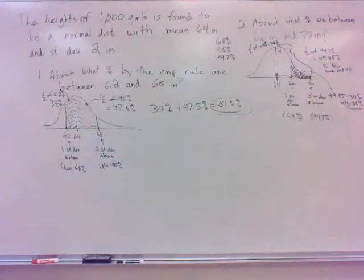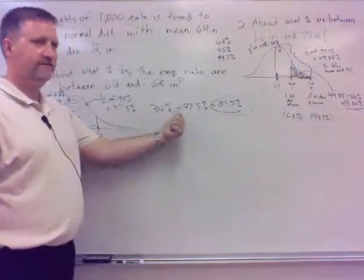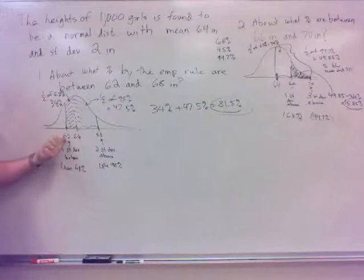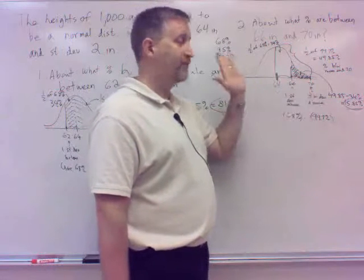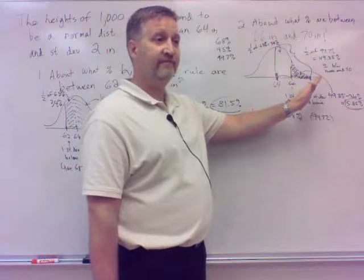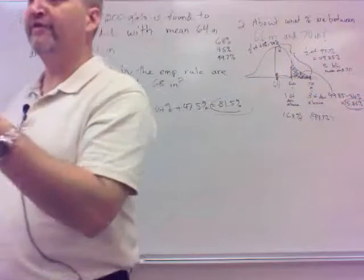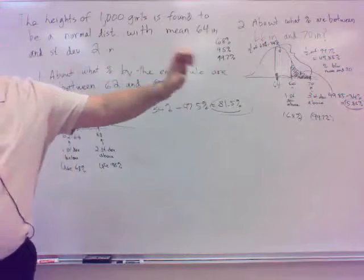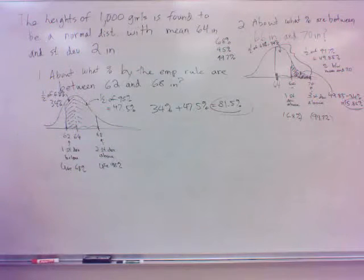Here's a general rule of thumb: when one value is below the mean and one is above the mean, you add the percentages. When both values are on the same side of the mean, you subtract the percentages. That's your general rule of thumb.